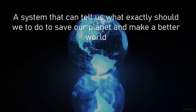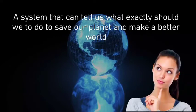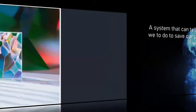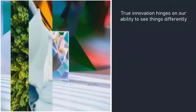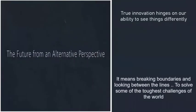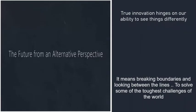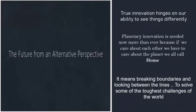Imagine a system that can tell us exactly what we should do to save our planet Earth — a system that can give us all the information about every tree and species on this planet and how we can use that data to make our planet better. Innovation hinges on our ability to see things differently, breaking boundaries and looking between the lines to solve some of the toughest challenges of the world. Planetary innovation is needed now more than ever, because if we care about each other, we have to care about the planet we all call home.